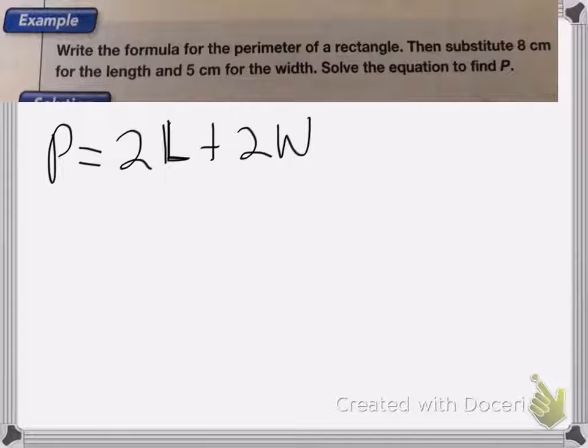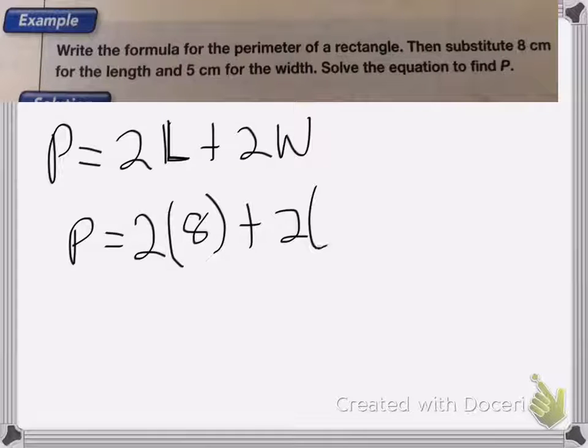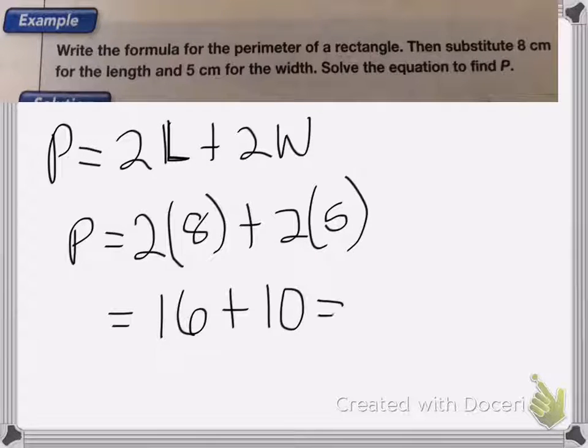So now we're going to put in the numbers. That's going to be P equals 2 times the length, 8, plus 2 times the width, 5. So 2 times 8 is 16, plus 2 times 5 is 10, which is equal to 26 centimeters.